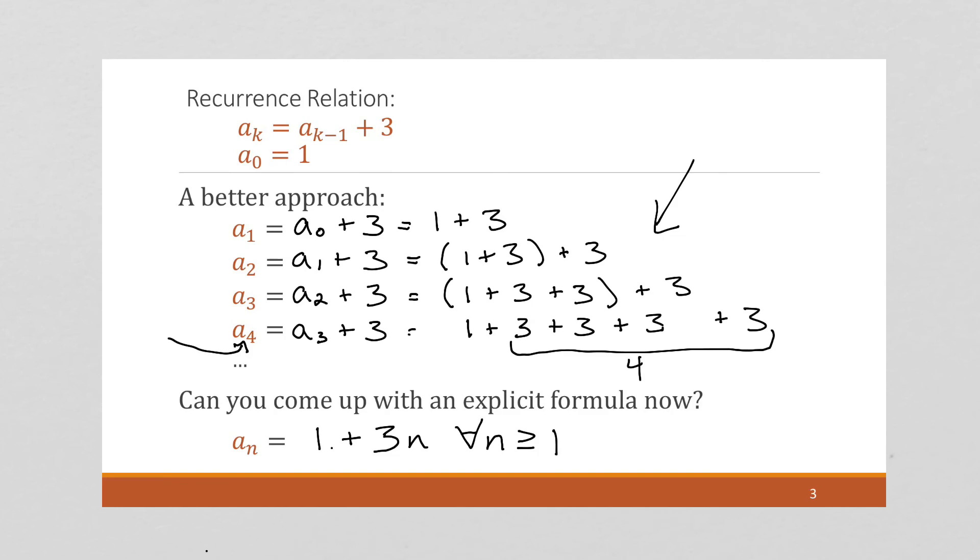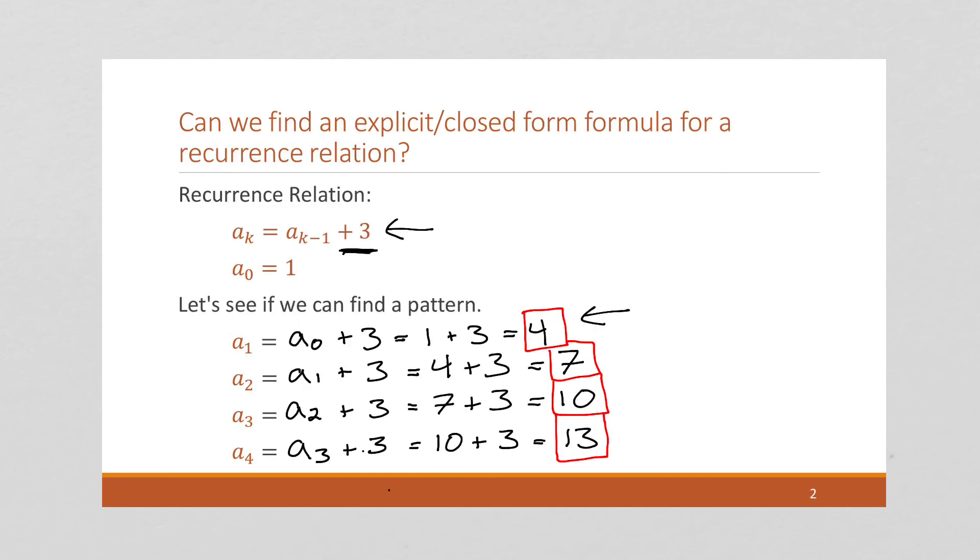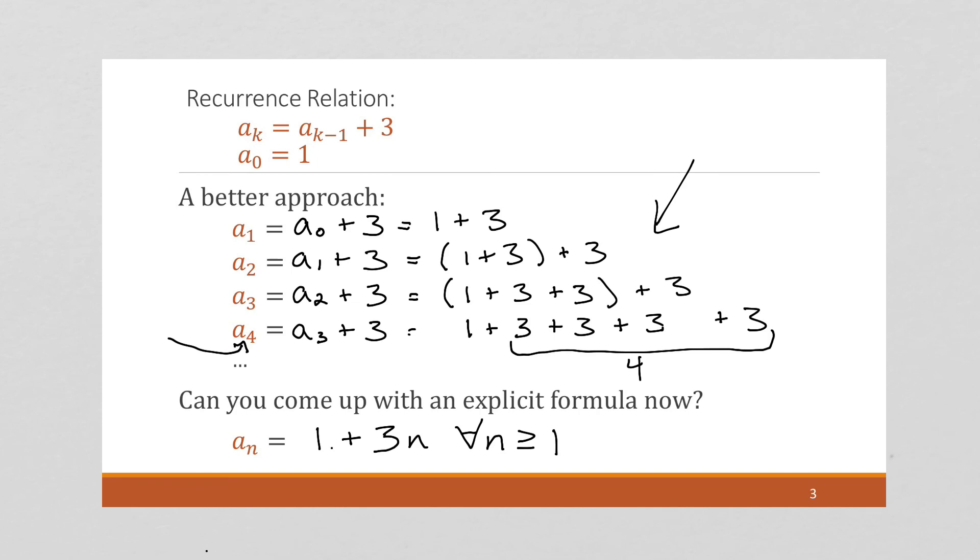But by ignoring the actual ending value here, this value was actually throwing this off. By ignoring that and just looking at the pattern that we get by substituting each value into the next, we can actually see a lot more about what's actually going on with the explicit formula. So we can come up with a nice definition for an explicit formula here.